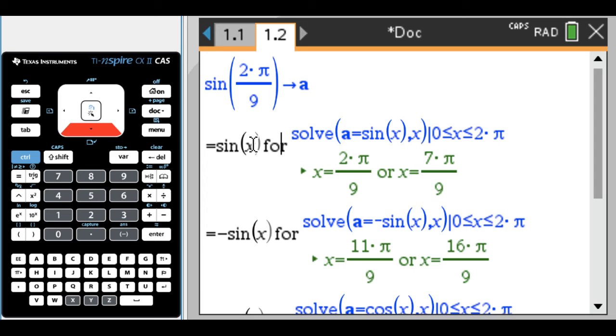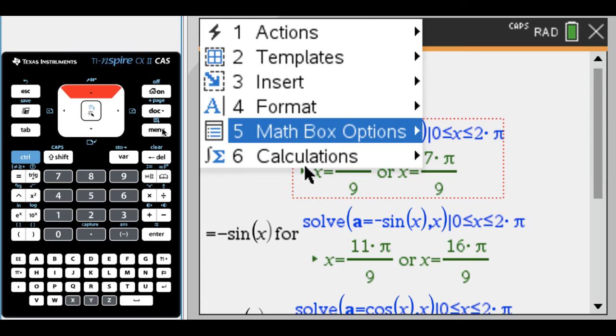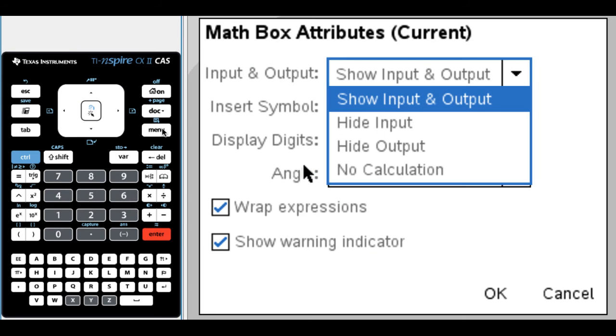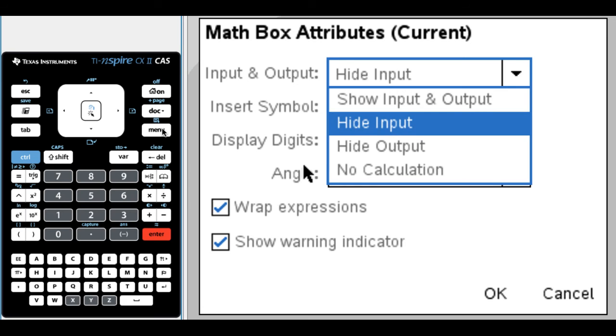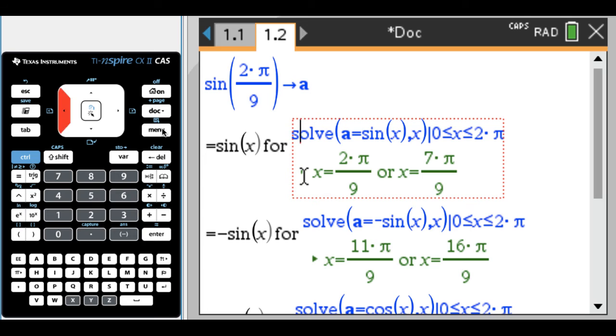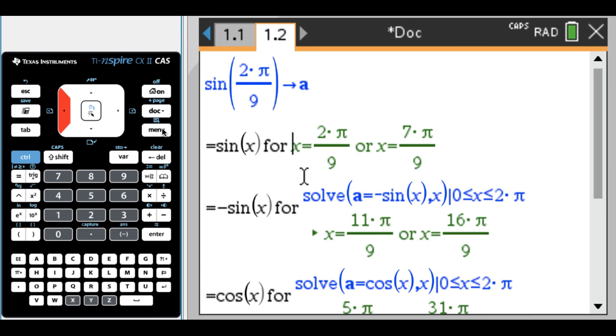So if you can guess what I want for the next one, I don't want to see this whole solve thing. I actually just want to see the output. So I have my cursor in the math box. I probably should have done this as I went, but I didn't. So I'm in the math box. I'm going to go to math box options, attributes, and I just want to see the output this time. So I'm going to hide the input and press okay. And then when I get out of this math box, it's gone and it looks a lot cleaner.